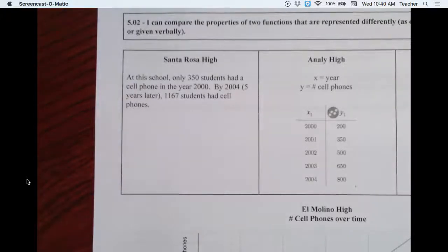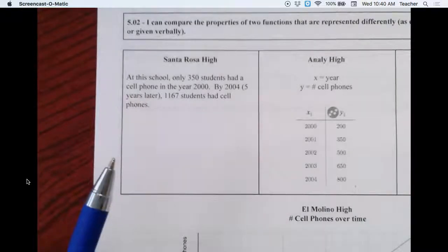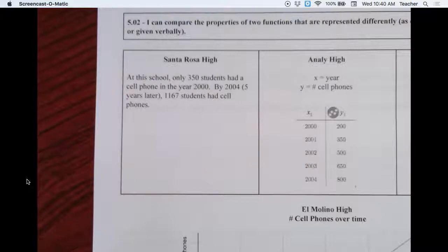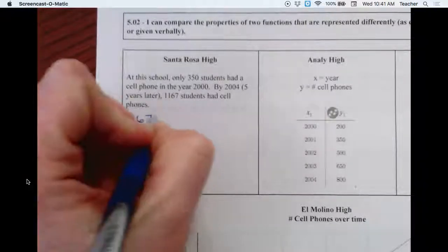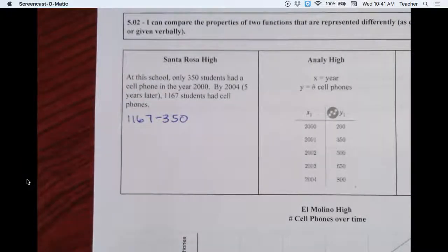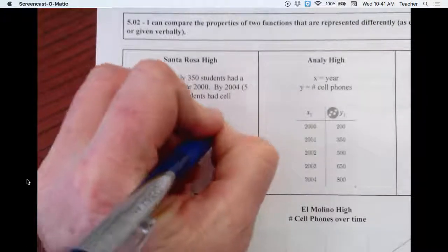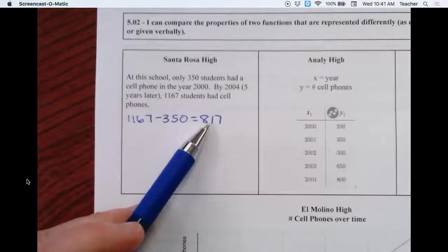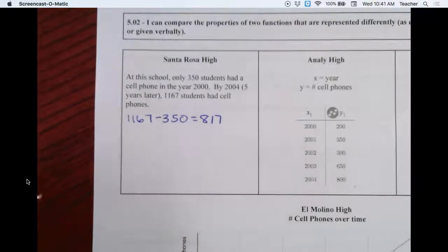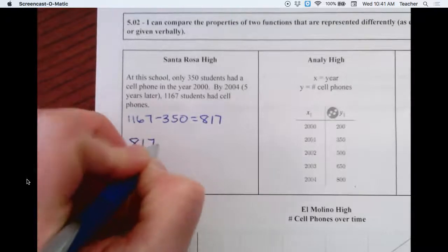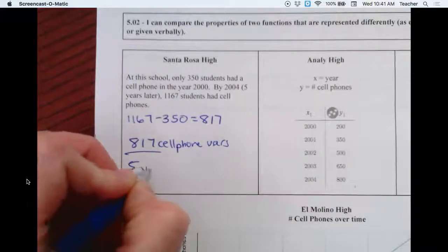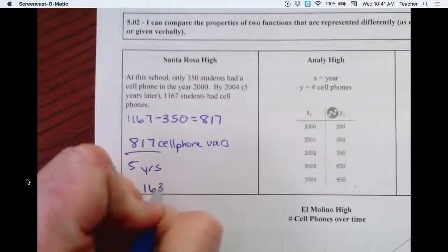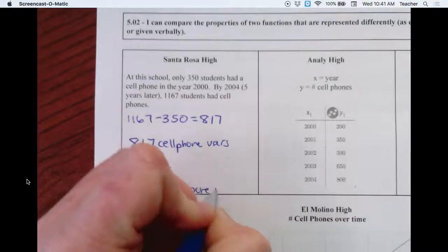Santa Rosa High. At this school, only 350 students had a cell phone in the year 2000. By 2004, five years later, 1,167 students had cell phones. So over five years, we went from 350 to 1167. We need to figure out what the change was. And I get 817. So 817 more kids over the course of five years had cell phones. To find out the change per year, the average rate of change...